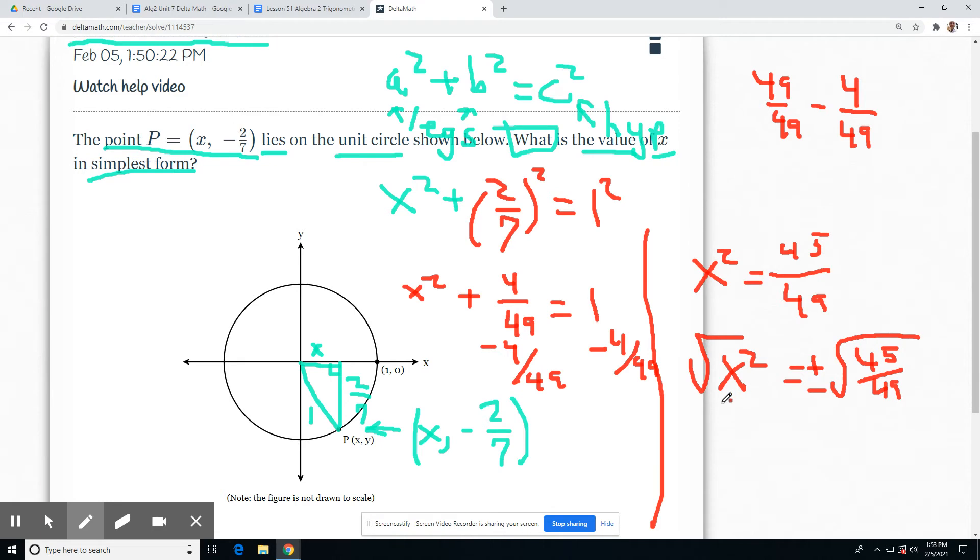And then we drop the minus sign because we're talking about side length here. So this would be square root of 45 over 49. And it looks like we have to simplify 45.